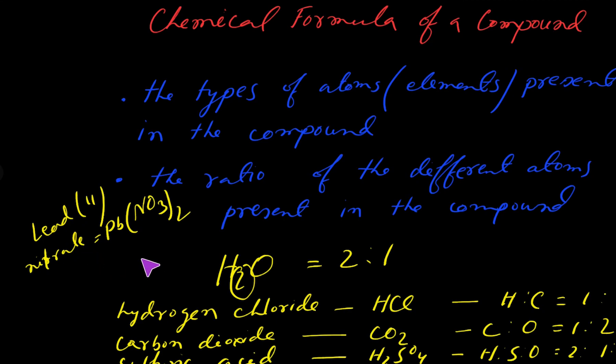Some chemical formulas contain brackets. For example, the formula of lead nitrate is Pb(NO3)2. To find out the total number of nitrogen and oxygen atoms within the brackets, we multiply the number of atoms of each element with the subscript located outside the brackets.